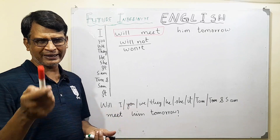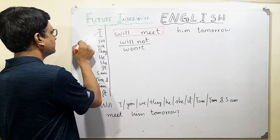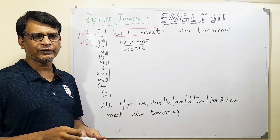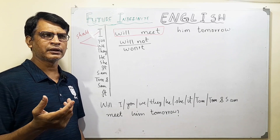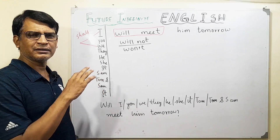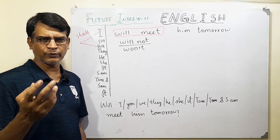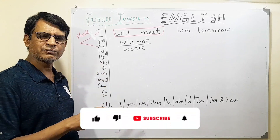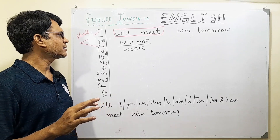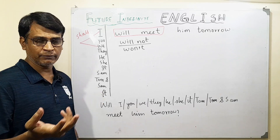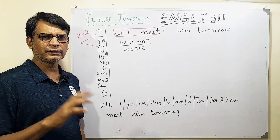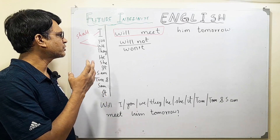Again, a little clarification. Some people think that you can use 'shall' with 'I' and 'we'. As I mentioned when we studied future simple, 'shall' can be used with them, but it was used in older times, not in today's modern world. In today's modern world, with whatever subject we have, we use 'will'. But if somebody says 'I shall meet him tomorrow' or 'we shall meet him tomorrow', do not fight with them — it's okay. But in modern English, we do not use 'shall' in this case.